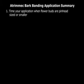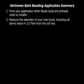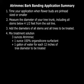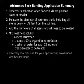To summarize, follow these simple steps for successful olive fruit suppression: Time your application when flower buds are at pinhead size or smaller. Measure the diameter of your tree trunk, including all stems below four and a half feet from the soil line, and add the diameters of all stems and all trees to be treated. Mix treatment solution at a rate of three ounces Atramec Plant Growth Regulator plus one ounce 100% organosilicone surfactant in one gallon of water for each 12 inches of tree diameter to be treated. Use very low pressure for your application to avoid runoff and bounce back.